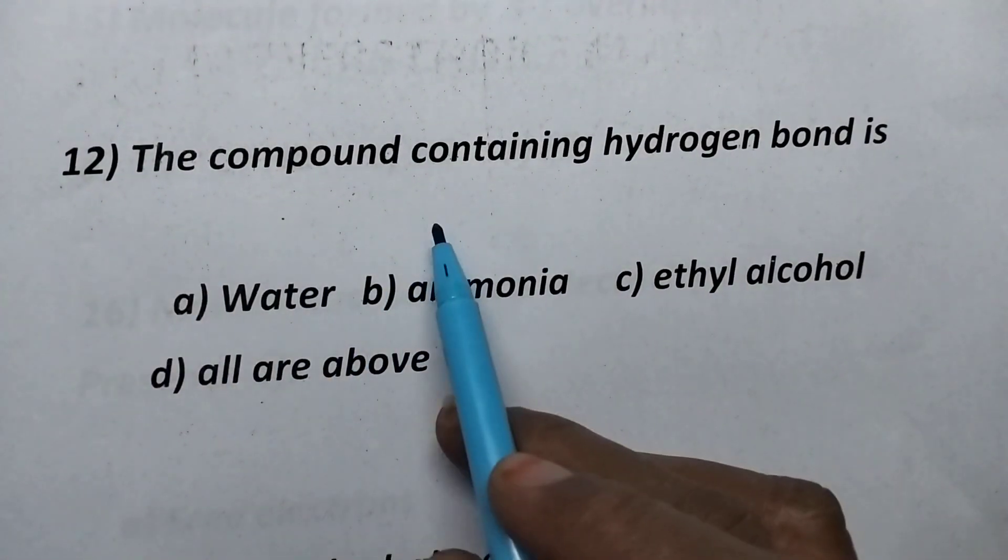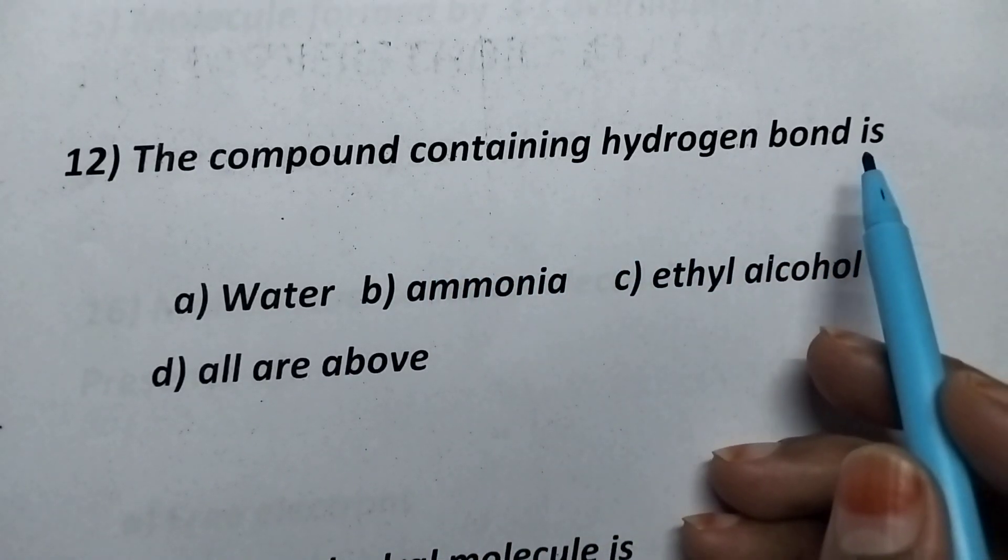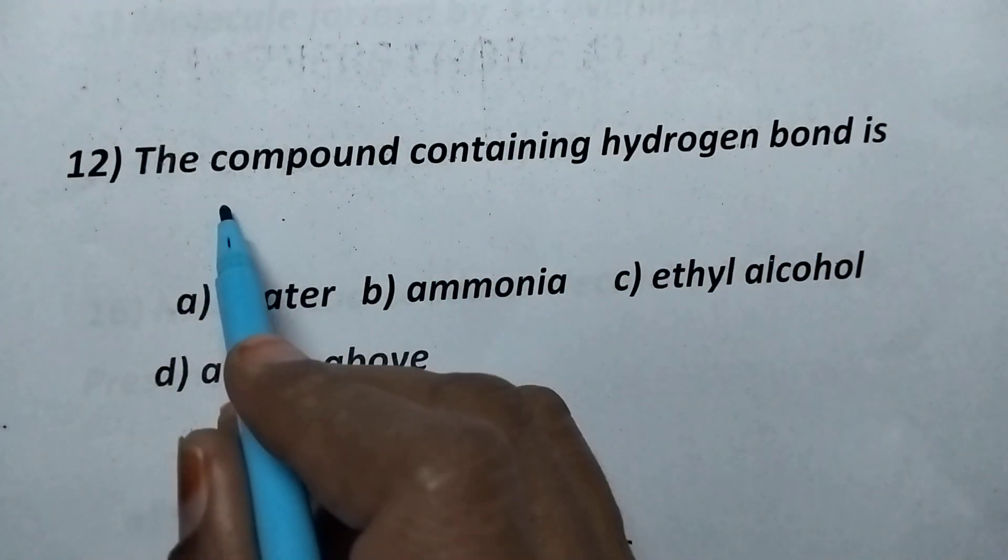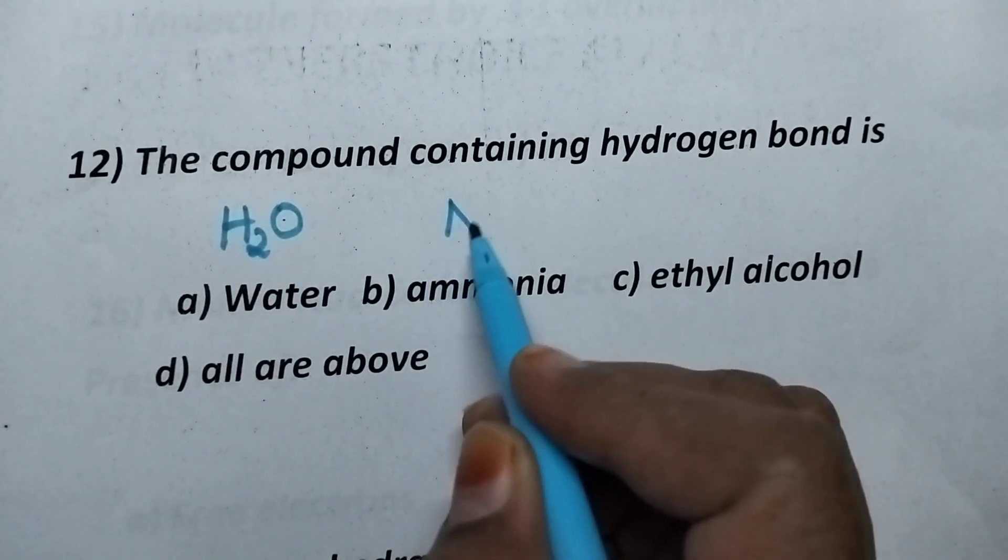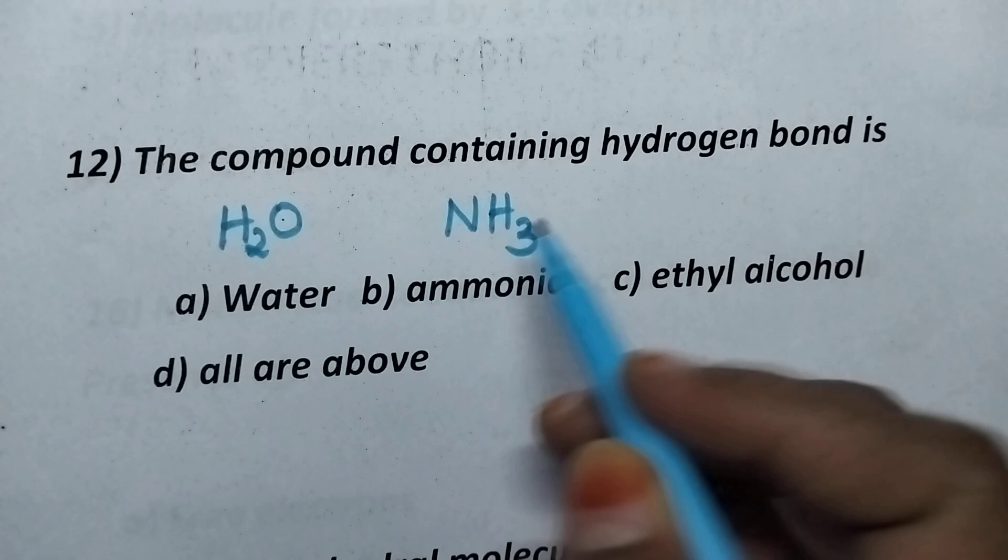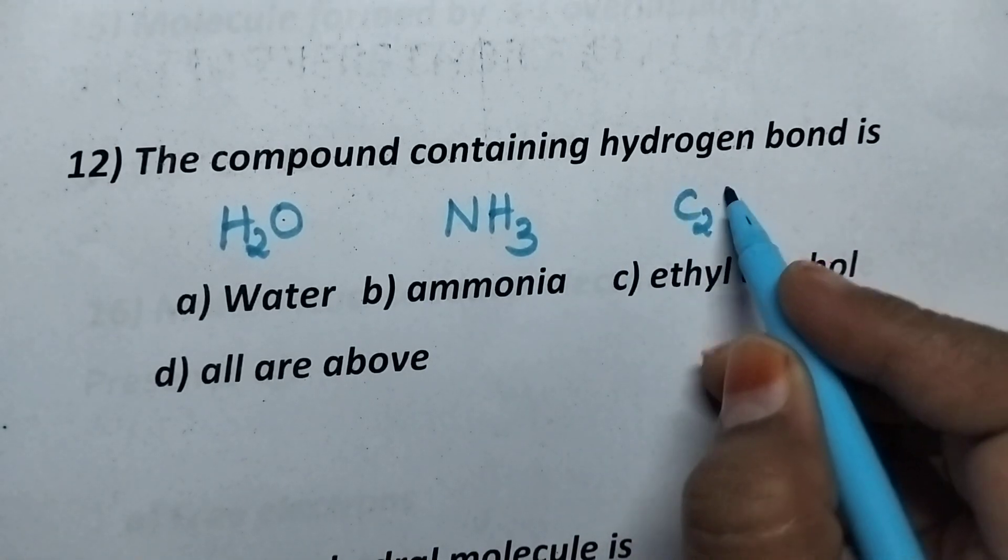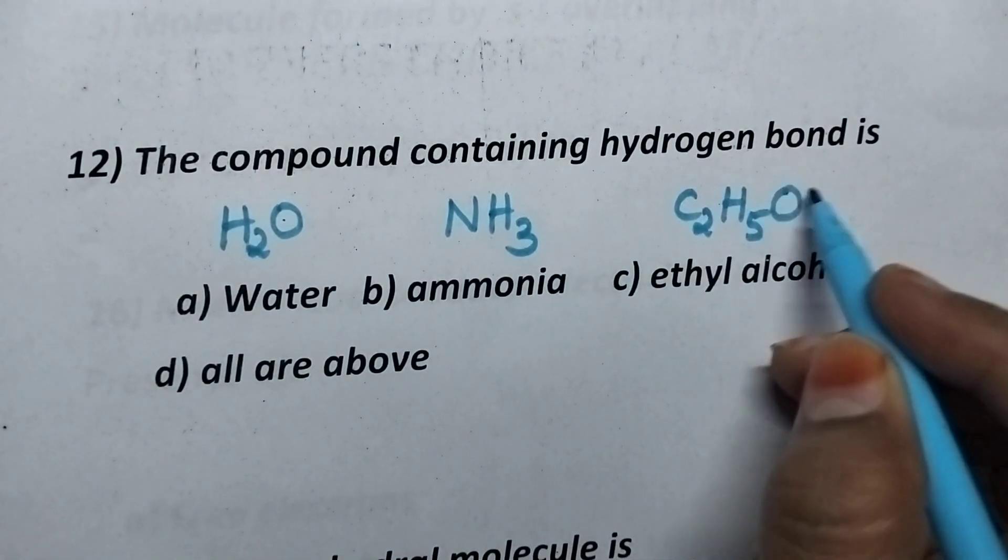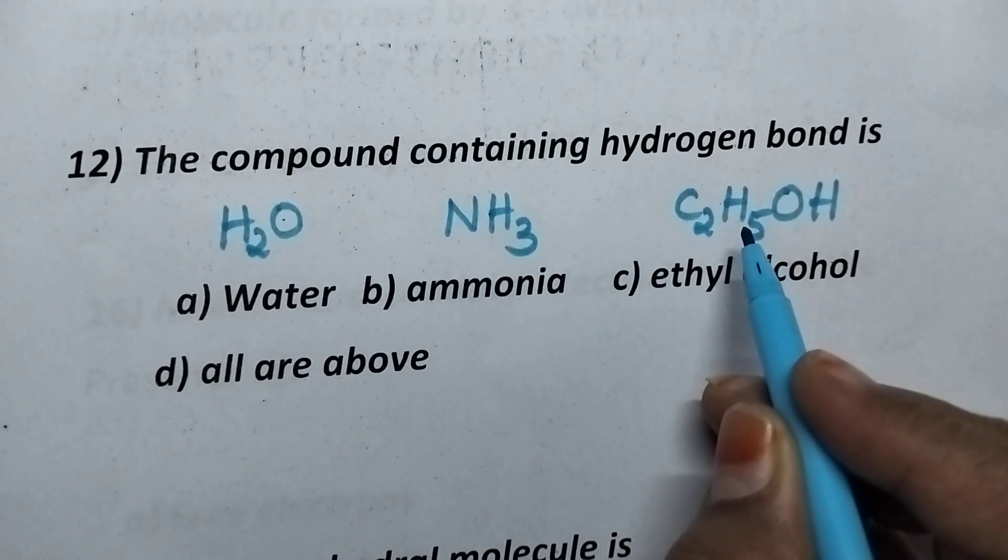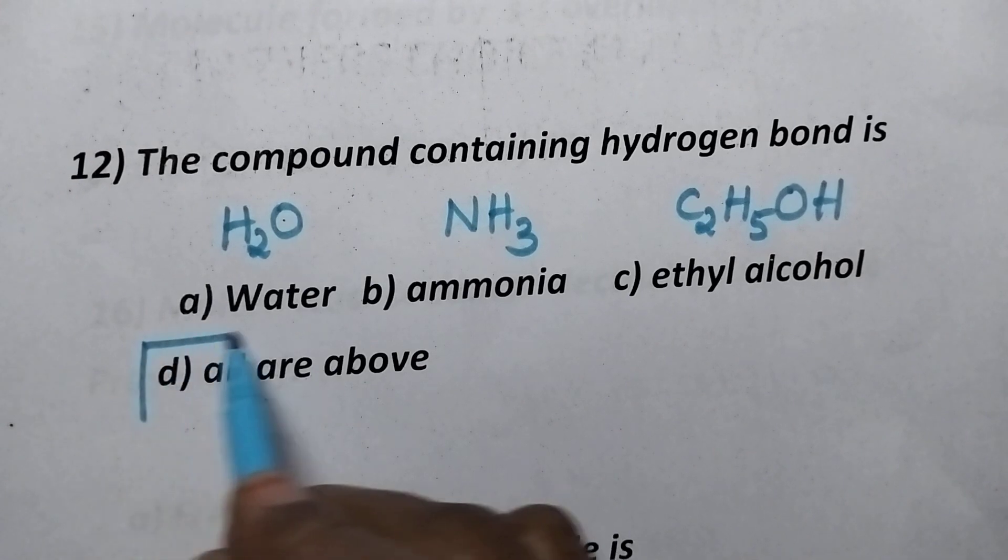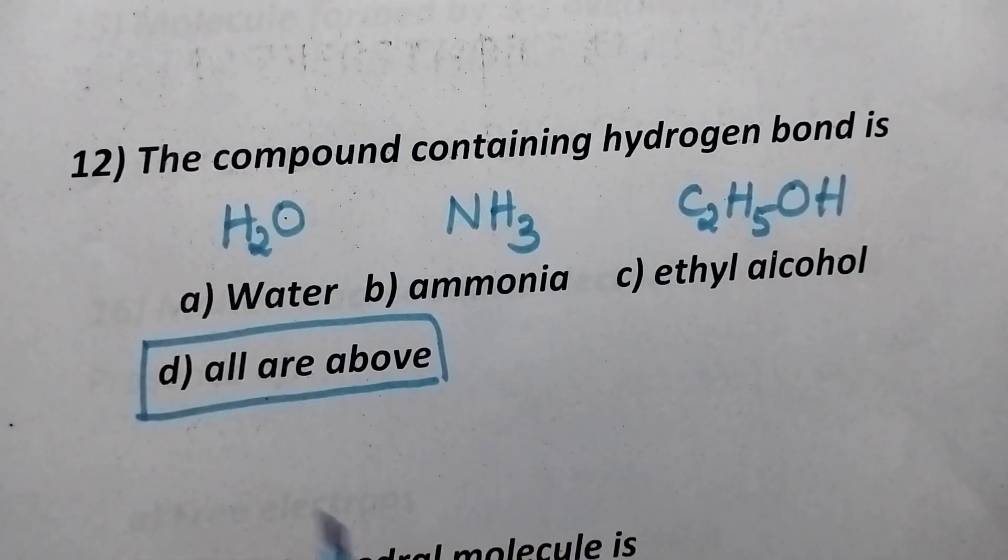The compound containing hydrogen bond is water. Its structure is H2O, ammonia NH3, ethyl alcohol, it is C2H5OH. So, all the 3 molecules are capable of forming hydrogen bonding. So, option D, all the above is the right answer.